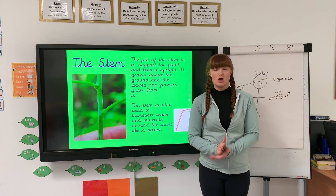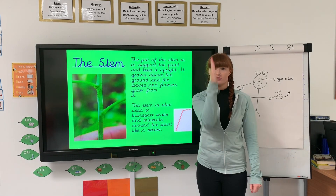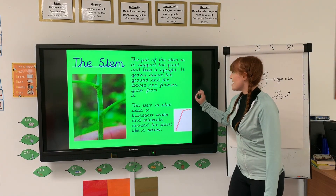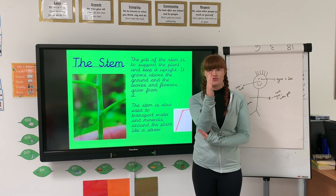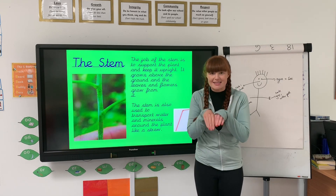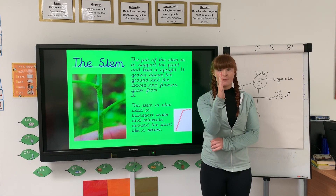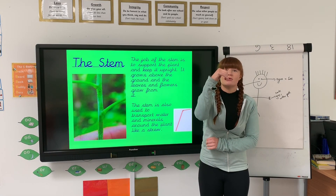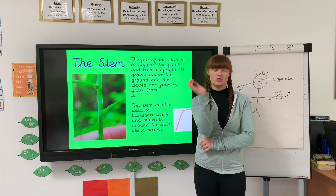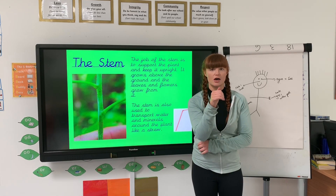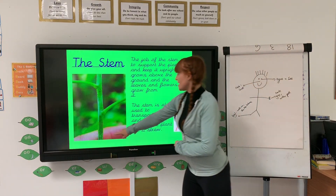Then we've got the stem. The stem is the big straight bit in the middle of the flower. The stem's job is to support the plant — it keeps the top of the plant, the bit above the mud, nice and straight. You usually know that if a stem is drooping, then that plant is not healthy — it's dying, or it hasn't got enough water or sunlight. A nice straight stem means it's a healthy plant.